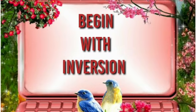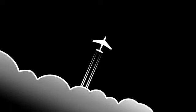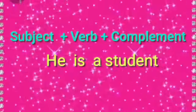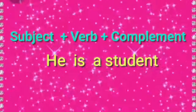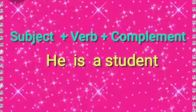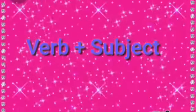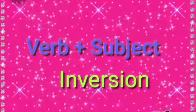We begin with inversion. Before that, you shall see the structure of the sentence. So far, we have studied that all positive sentences follow this structure: subject, verb, complements. But in certain cases, we can change the word order to verb plus subject. That is called inversion. Inversion means putting the verb before the subject. It is a literary technique in which the normal order of words is reversed.